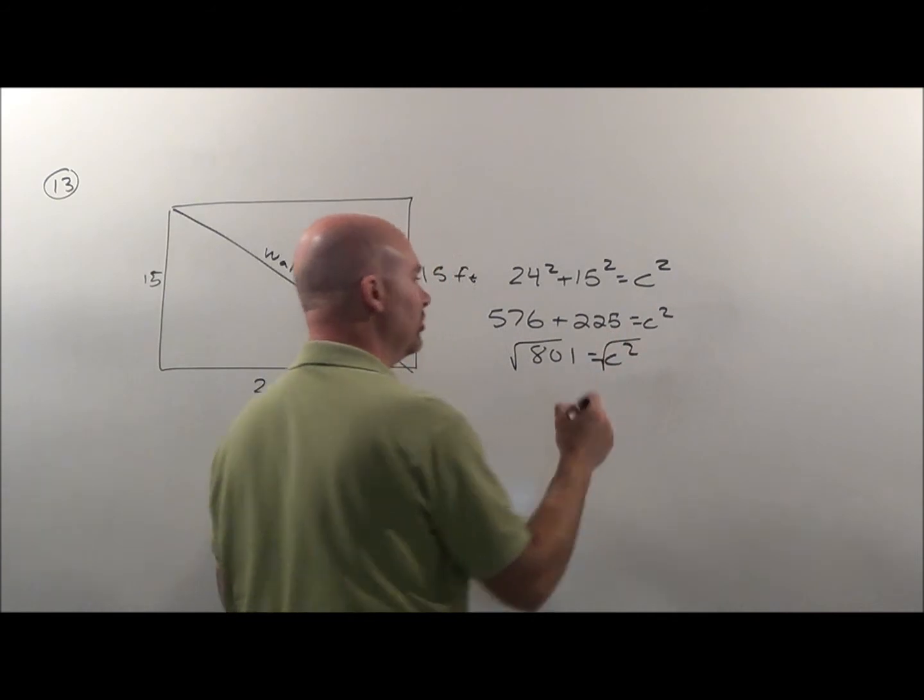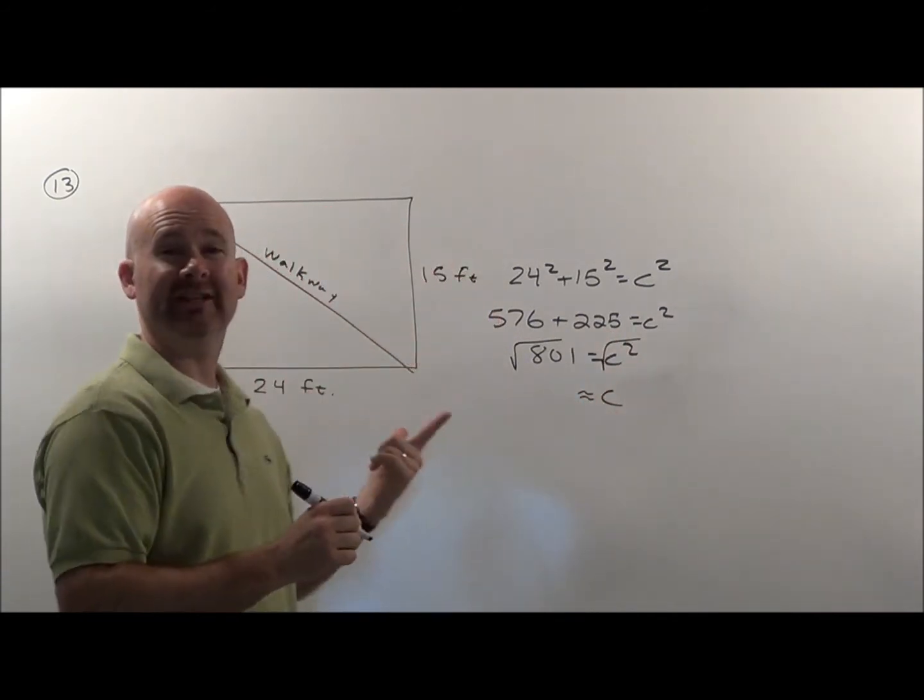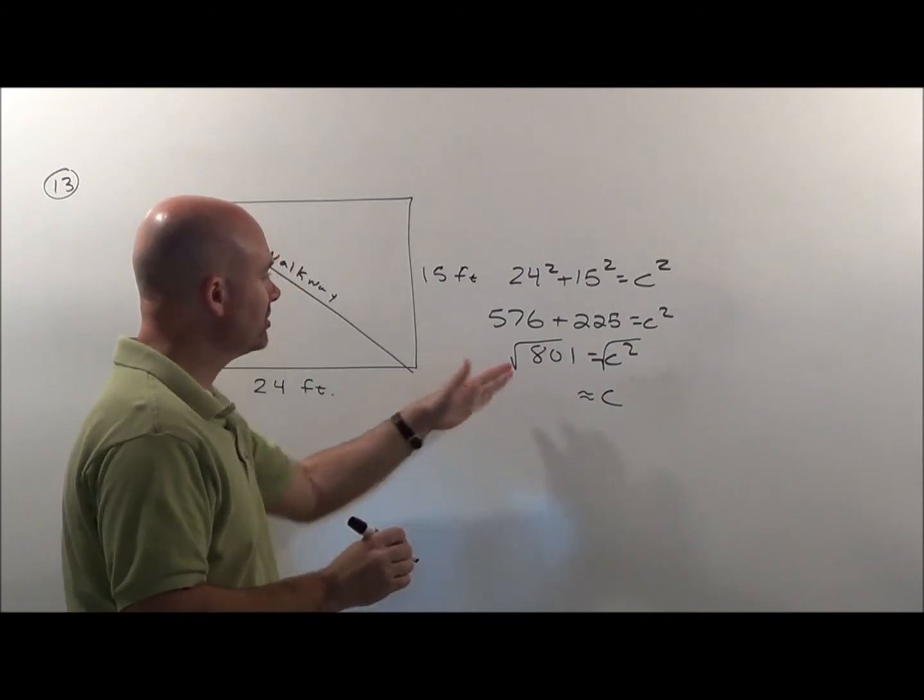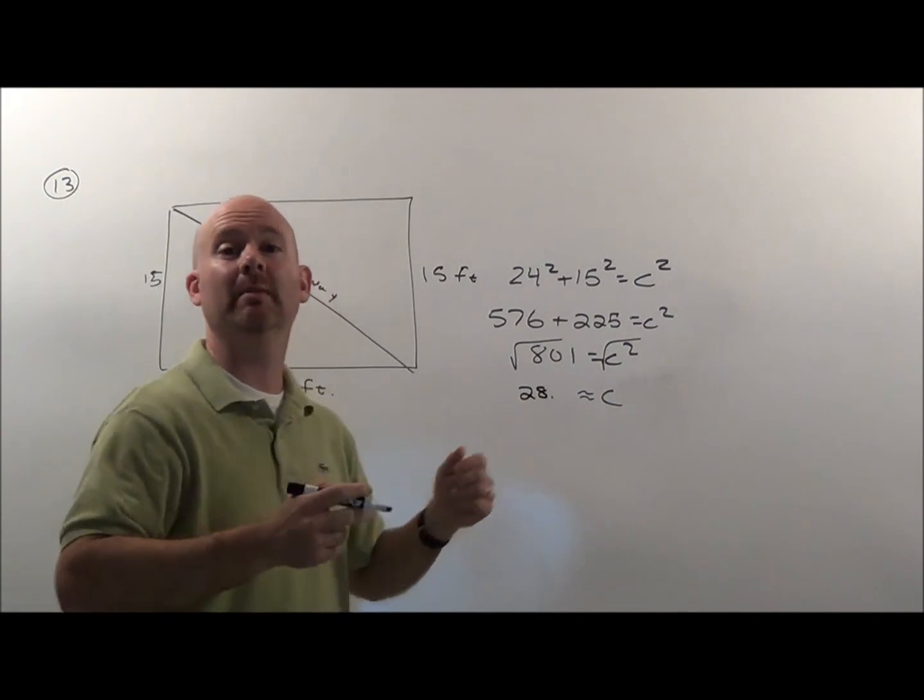I take the square root of both sides. With a calculator, I know 30 times 30 is 900, so this is in the 28 range, 28 point something.